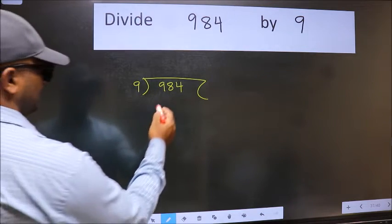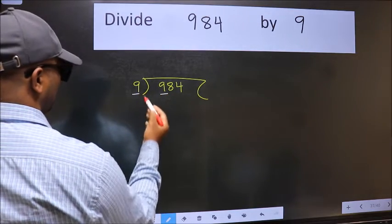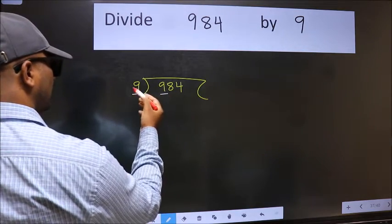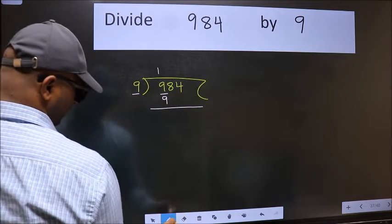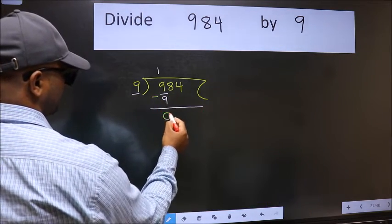Next. Here we have 9 and here 9. When do we get 9 in 9 table? 9 ones, 9. Now we should subtract. We get 0.